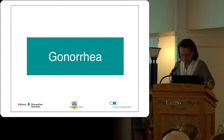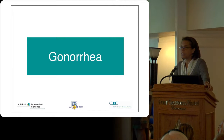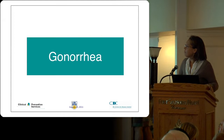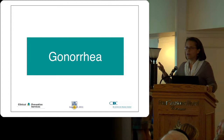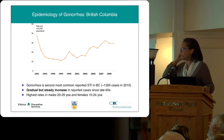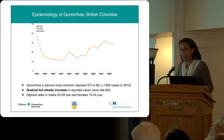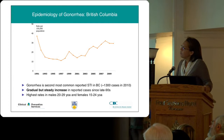Let's go to gonorrhea. I always like to say I deal in the glamour diseases — it's very exciting at cocktail parties to mention the work I do because everyone disperses rapidly. The epidemiology of gonorrhea: it's the second most common reported STI in BC, with about 1,300 cases reported a year. We've had a gradual but steady increase since the late 1990s, and we're seeing this both in males and in young females, particularly 15 to 24-year-olds.